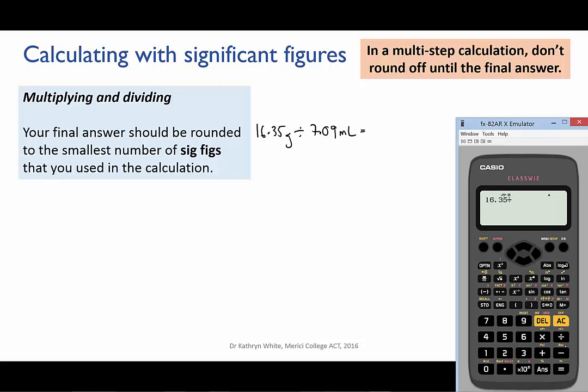if we do the calculation 16.35 grams divided by 7.09 mils, the calculator gives me the answer 2.3060648 etc. I'm going to write that down to five or six decimal places, I'm going to leave some dots after it to show that it continues on.